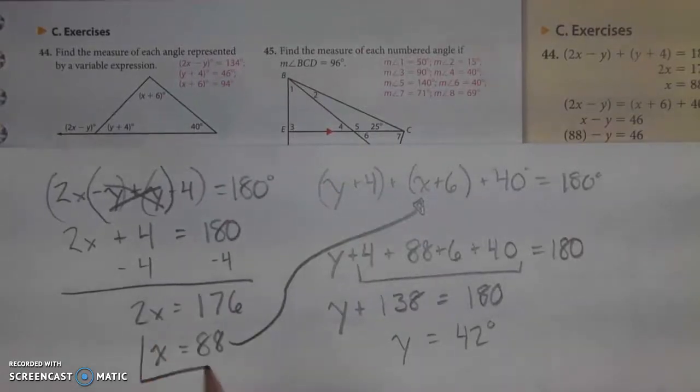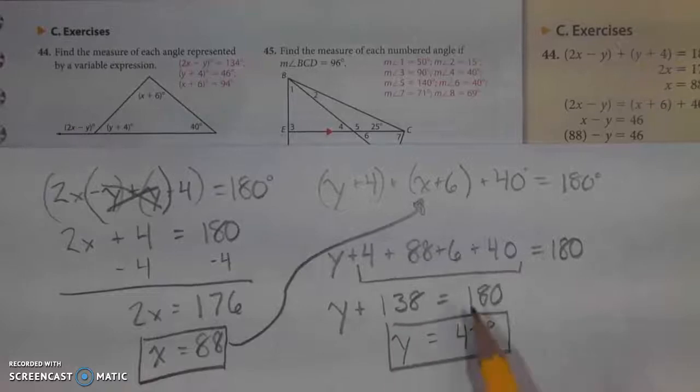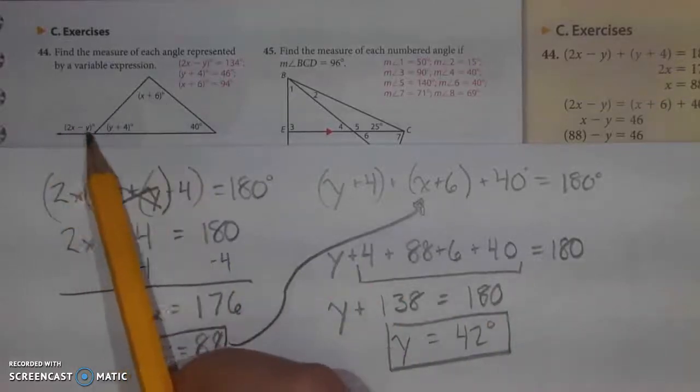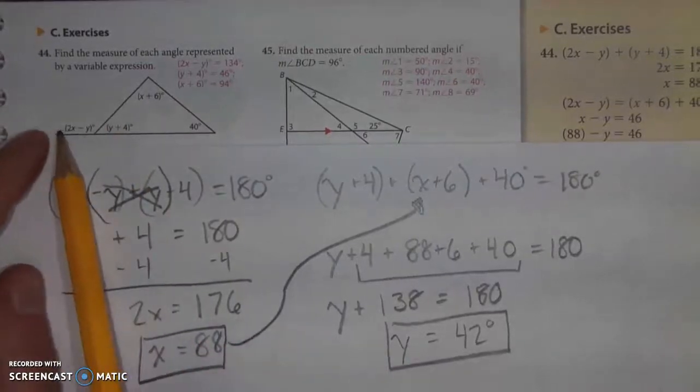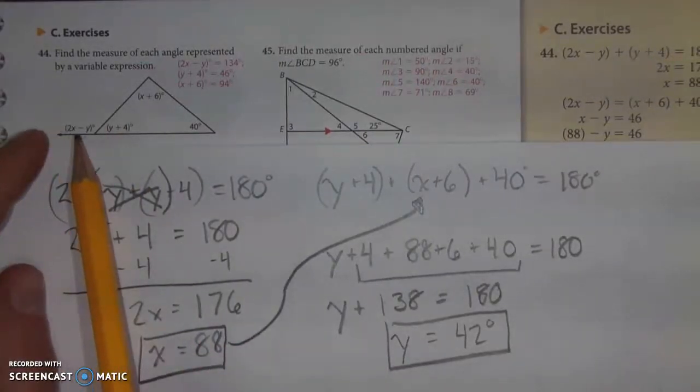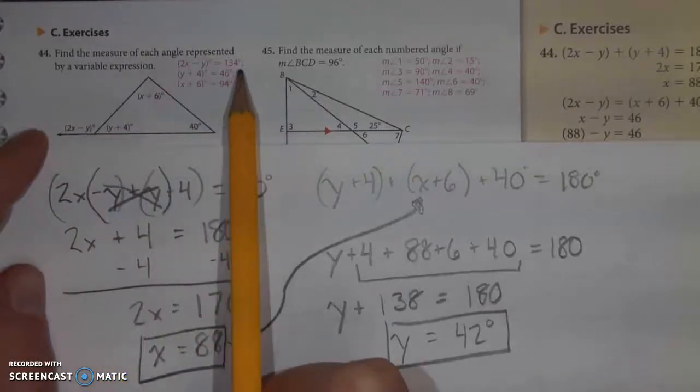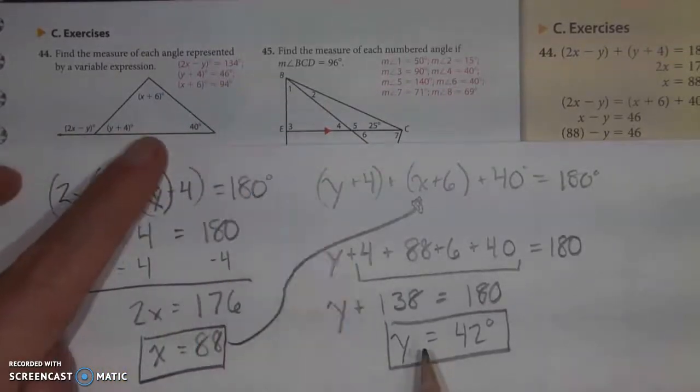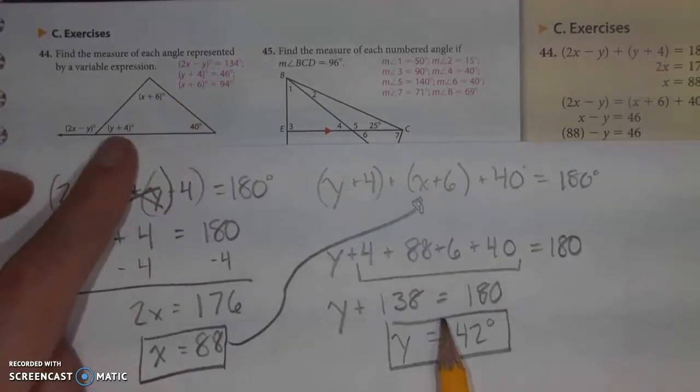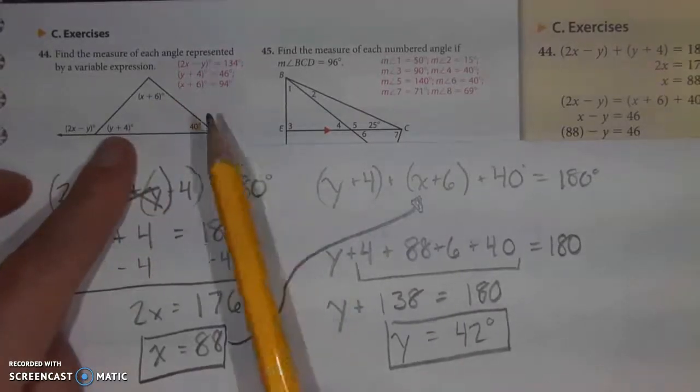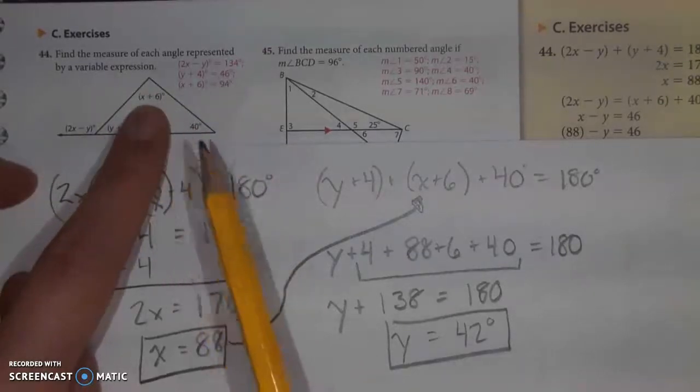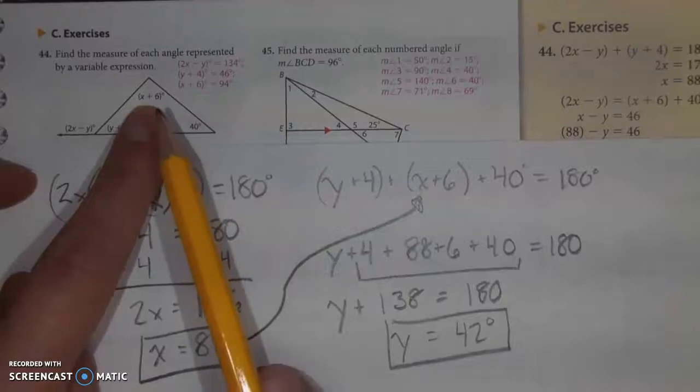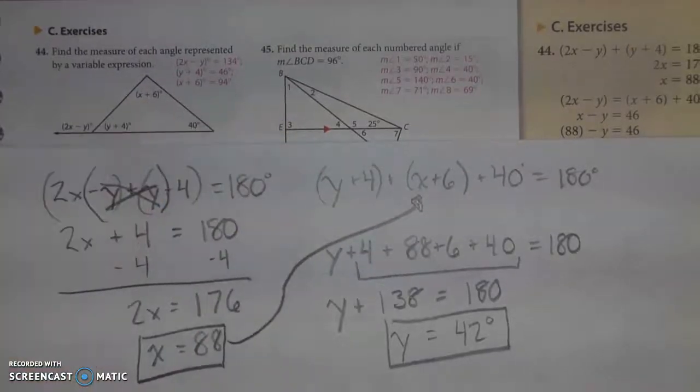So now at this point, I have x. I have y. So I can solve for each of the angles in this triangle and the external angle over here. So in order to get this one, 2 times 88 minus 42 should give us an answer of 134. y plus 4 or 42 plus 4 will give me an answer of 46. And last but not least, x plus 6 becomes 88 plus 6, which gives us 94. I hope that helps. Let me know if you have any other questions.